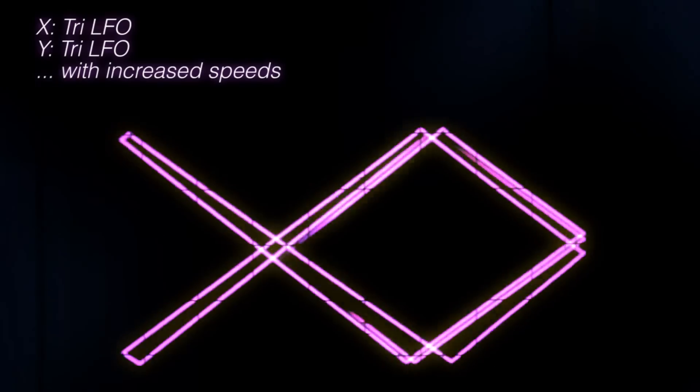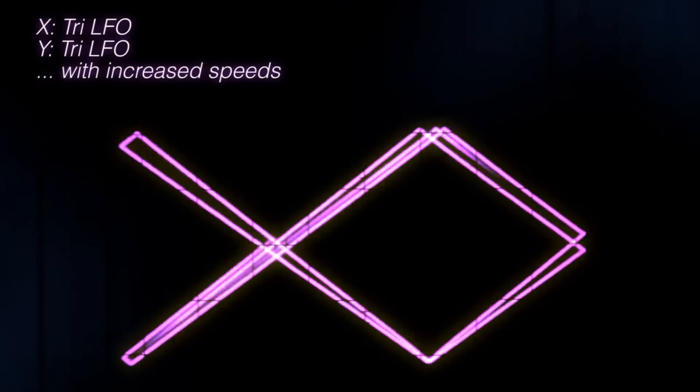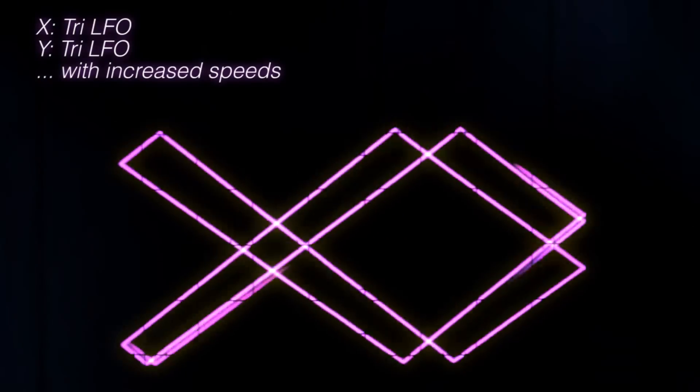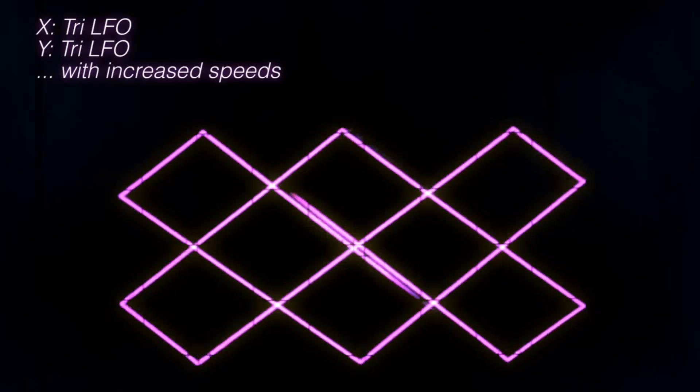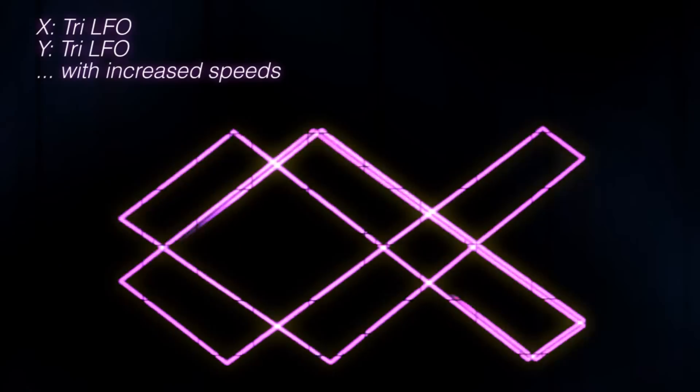This is a slow triangle LFO connected to the X input, which moves the beam left and right. Now I add another similar LFO to the Y input, which moves the beam around in two dimensions on straight lines. Here I increase the speeds of both LFOs, which will draw the path of the beams on the oscilloscope screen.